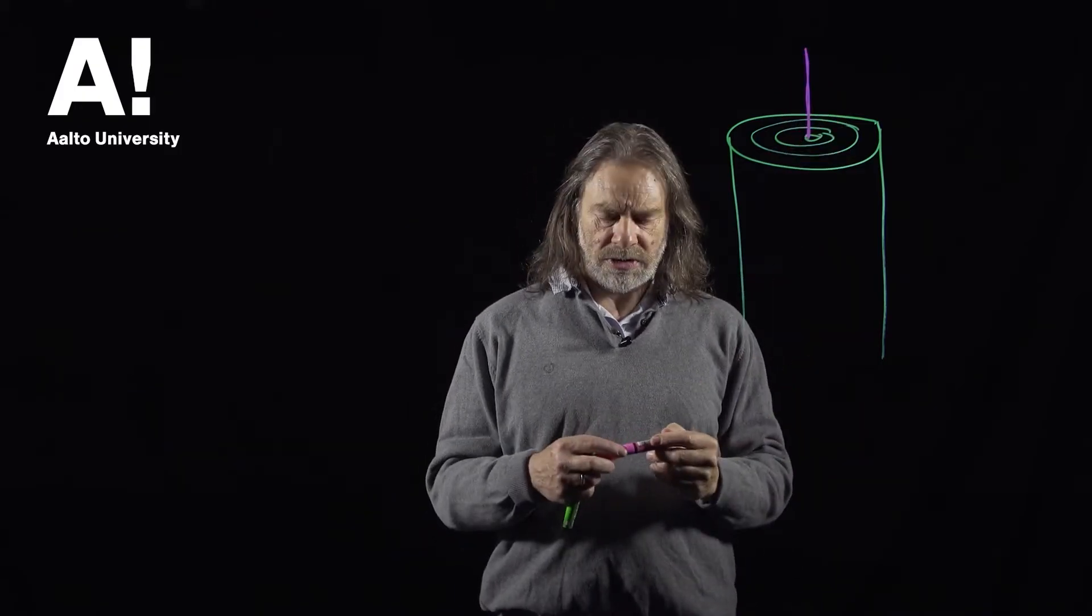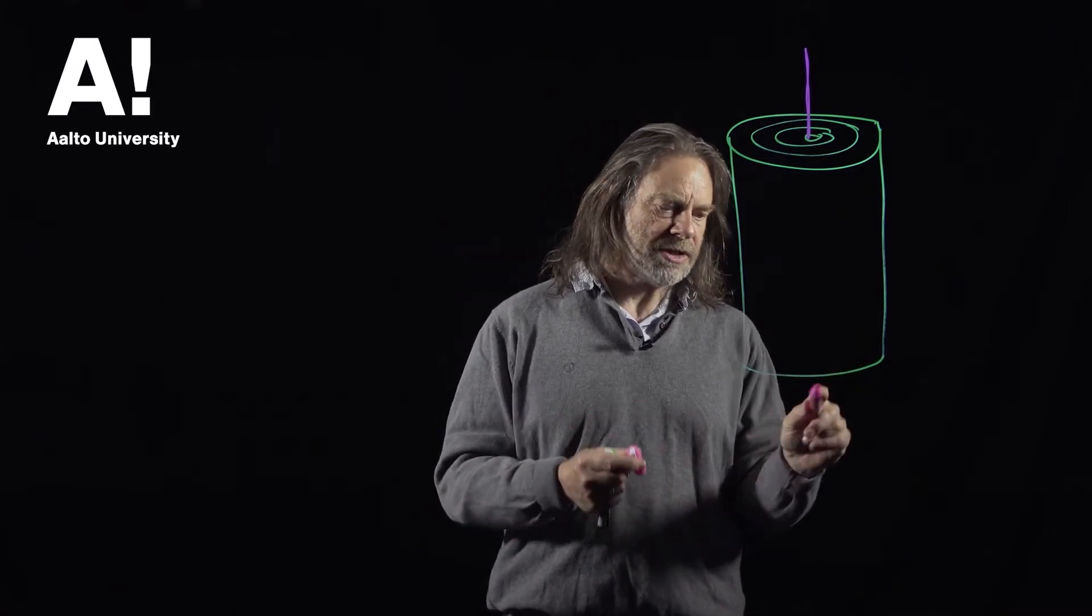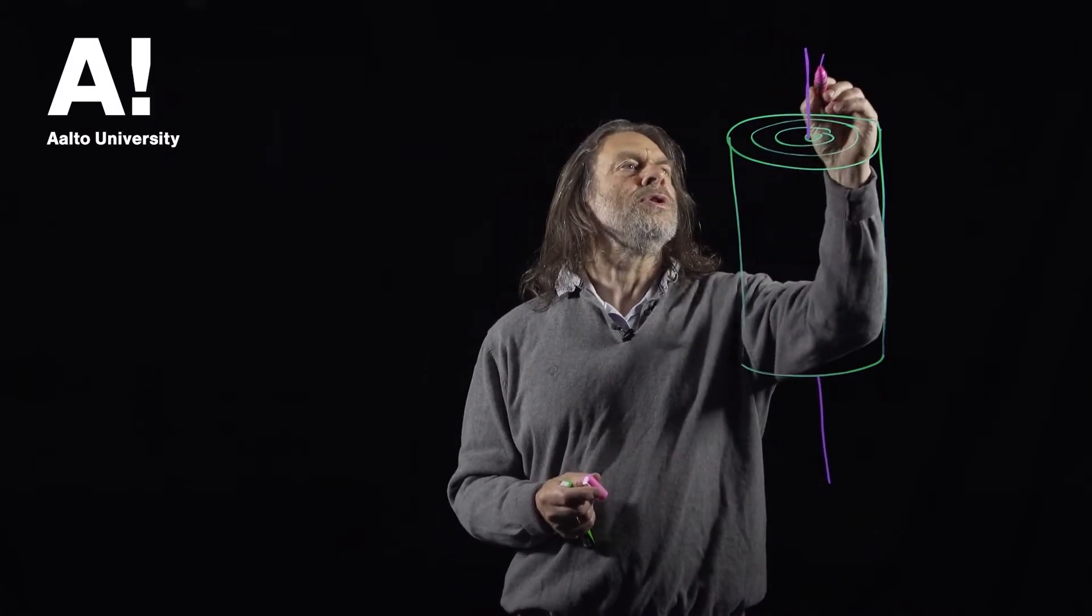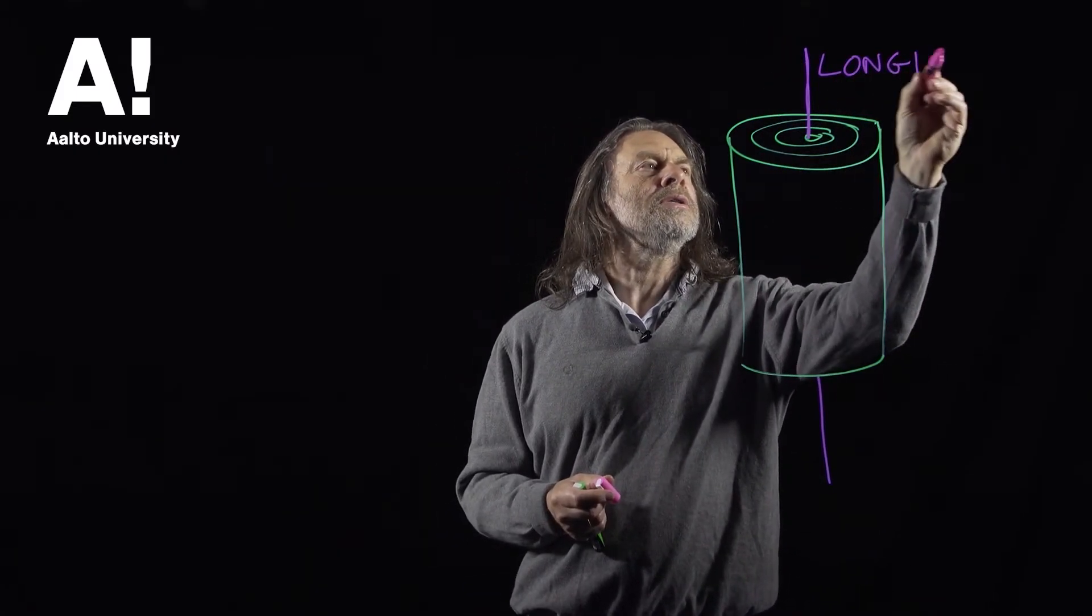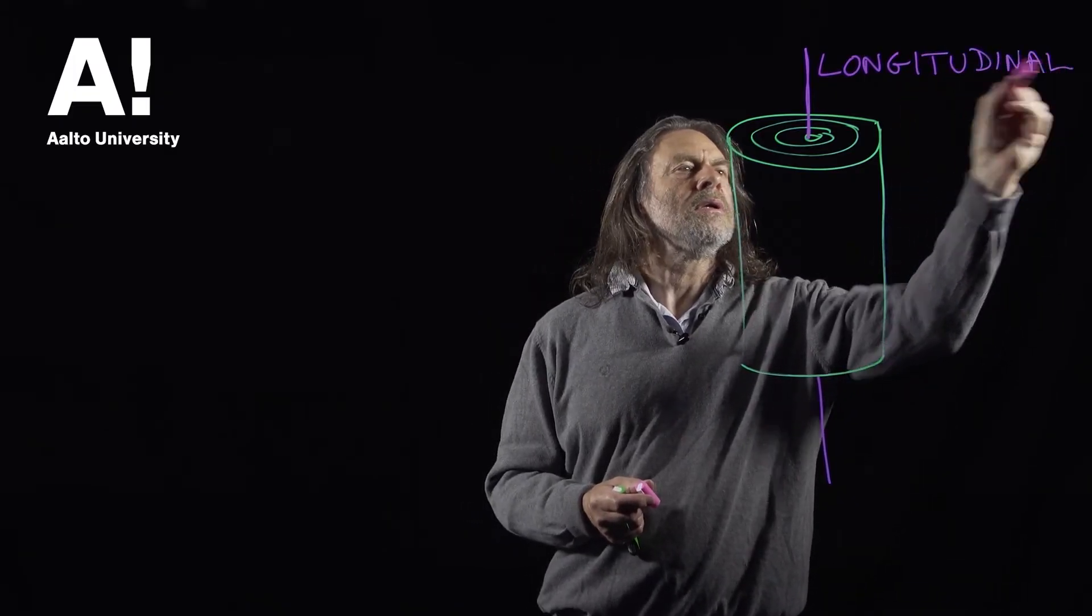So if we've got a trunk like this and we have the vertical axis which is the growth direction, that is called the longitudinal axis.